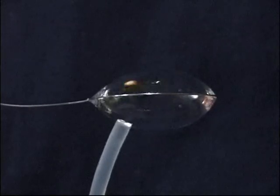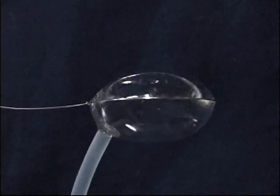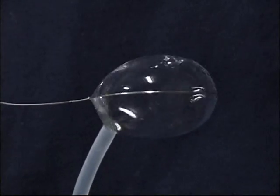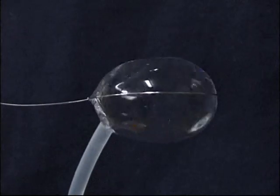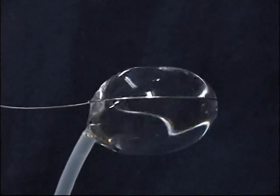First, we start off with a standard water sheet and we just add more water to it and puff it up into a full sphere as you are seeing here. All these spheres are made with the 50 millimeter diameter loop.